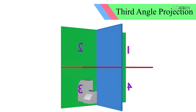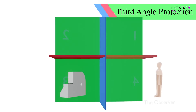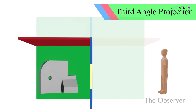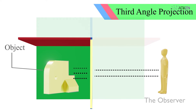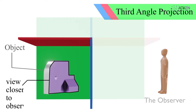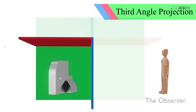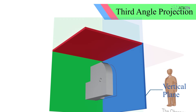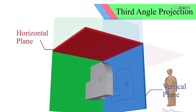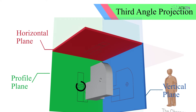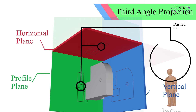First angle projection is predominantly used in Europe and Asia. In third angle projection, the object is assumed to be situated in the third quadrant. Here, the projection plane comes in between the object and the observer, and the view of the object nearer to the projection plane is projected on it. The front view is projected on the vertical plane, the top view comes on the horizontal plane, and the right side view is projected on the profile plane. Hidden edges of the object are represented by hidden lines, as in first angle projection.